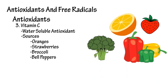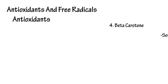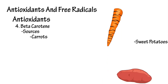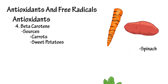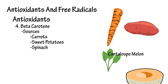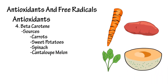Beta-carotene is a powerful antioxidant and is found in carrots, sweet potatoes, spinach, and cantaloupe melon. One other note: our bodies do manufacture some antioxidants on their own, but this production declines with age.